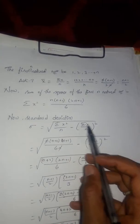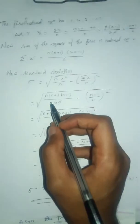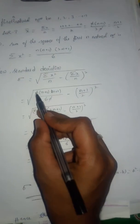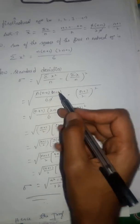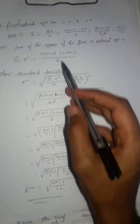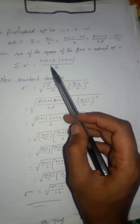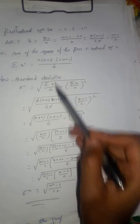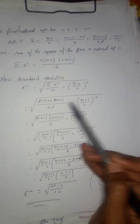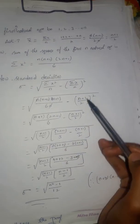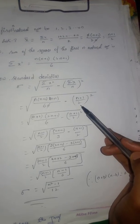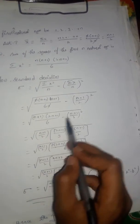Now substituting the values: σx²/n becomes n(n+1)(2n+1) divided by 6n. The n gets cancelled. The σx/n value is (n+1) divided by 2. We write the remaining terms minus the whole square.